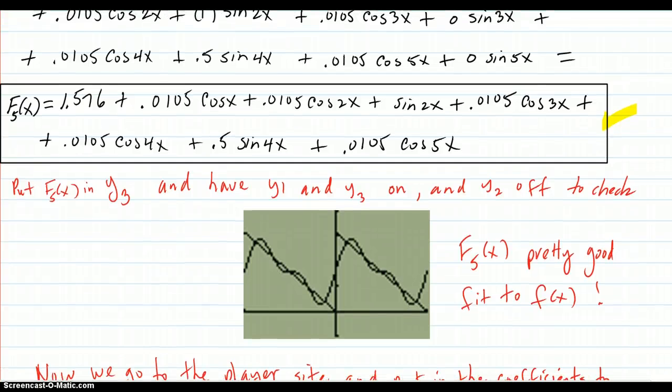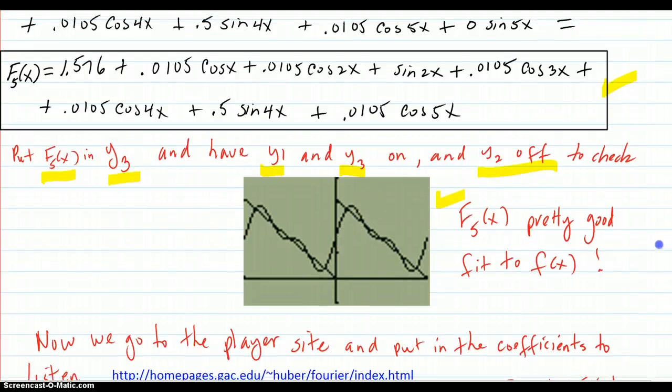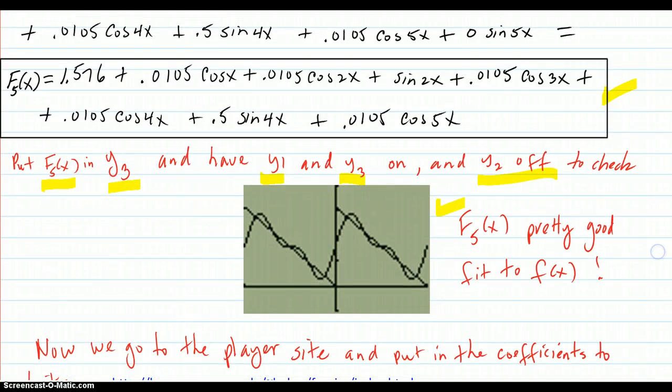So now you're going to check it. Put f5 into y3. Have y1 and y3 on to graph, and y2 off. And here's the graph you get. It's looking pretty good. That's a real good fit there. It could be better, of course. And the better it is, you know, the more higher degree you have of the Fourier polynomial. The more it's tight to this. It's going to be going like this.